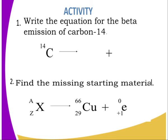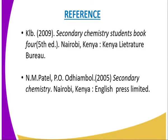To consolidate today's lesson, answer the following questions. Question one: write the equation for the beta emission of carbon-14 — when carbon-14 undergoes beta decay, what nuclides or products are formed? Question two: find the missing starting material — an unstable nuclide X with mass number A and atomic number Z undergoes beta decay, losing a beta particle to give a new nuclide. What is the composition of the starting material?